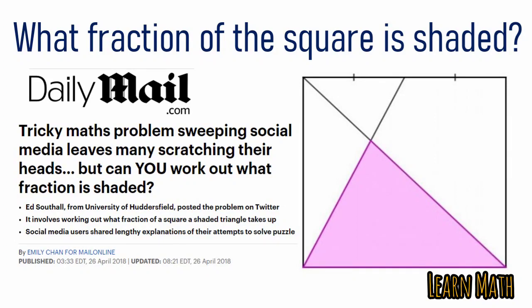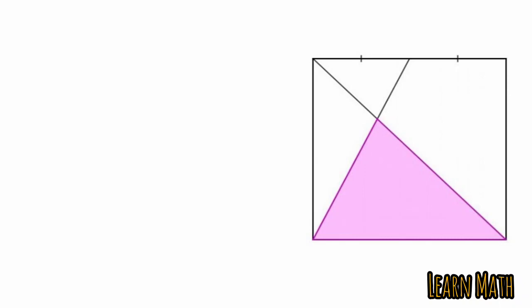To solve the question, we have to find what fraction of the square is shaded. Let this is a square ABCD and E is the midpoint of AD and F is the point of intersection of AC and BE. Let the side of the square is equal to x, so BC is equal to x, and E is the midpoint so AE and ED is equal to x by two.